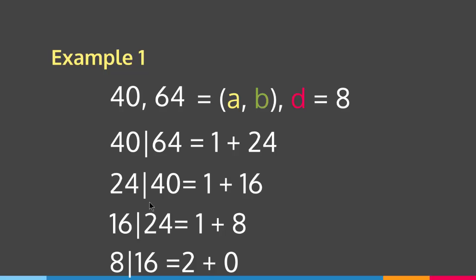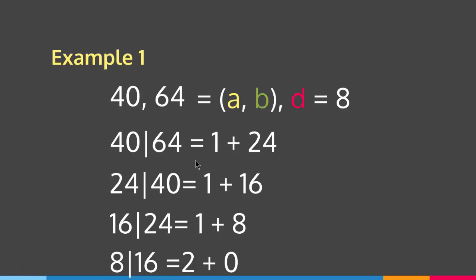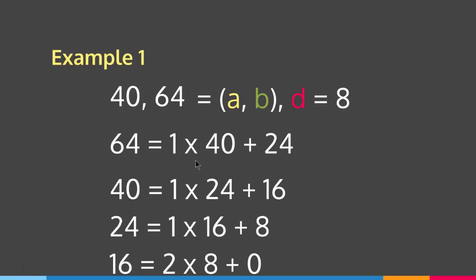This was a refresher on finding the gcd using the Euclidean algorithm. Now, to extend it, we rewrite each step in terms of the remainder. So: 64 equals 1 times 40 plus 24; 40 equals 1 times 24 plus 16; 24 equals 1 times 16 plus 8; and 16 equals 2 times 8 plus 0.